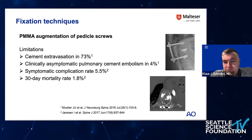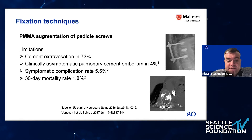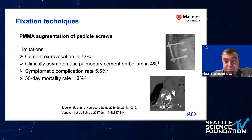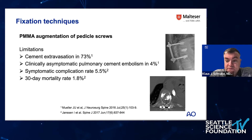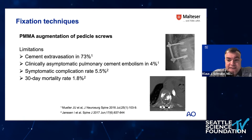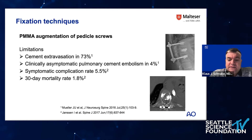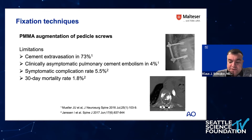However, there are limitations to cement augmentation. Cement leakage occurs frequently — up to 73 percent in some studies — and although mostly asymptomatic, pulmonary cement embolism occurs in up to 4 percent when CT thorax is performed afterward. A meta-analysis found a symptomatic complication rate of 5.5 percent for screw augmentations and a 30-day mortality of 1.8 percent. There is a real risk of harming patients.